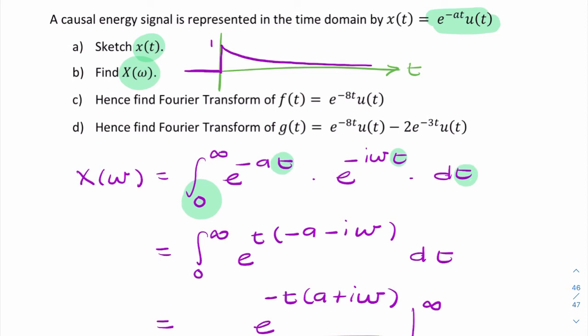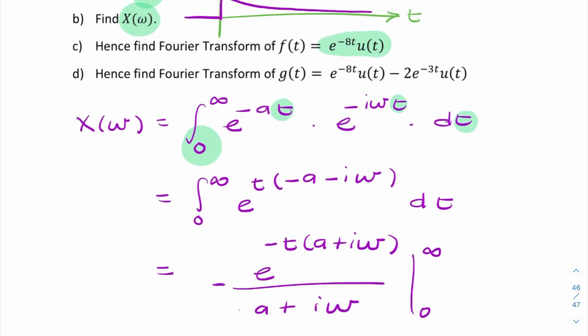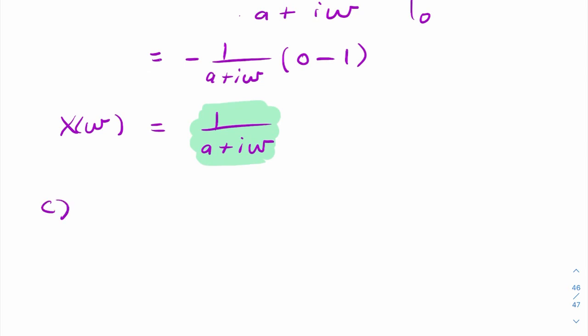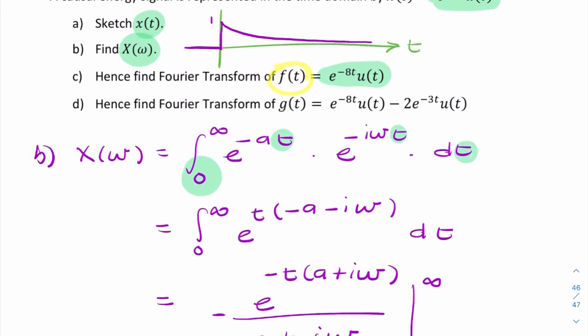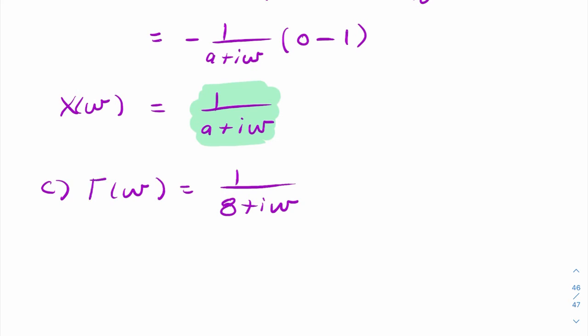Now, the next part says, hence, that means using the result we just found up here, find the Fourier transform of that. So rather than integrating again, we can simply use the result we just found, but using eight instead of a. So if this was part b, for part c, we can say x of omega equals one over eight plus i omega. So we've simply replaced the a with the constant eight. And this function was called f. So really, we should call that f of omega.